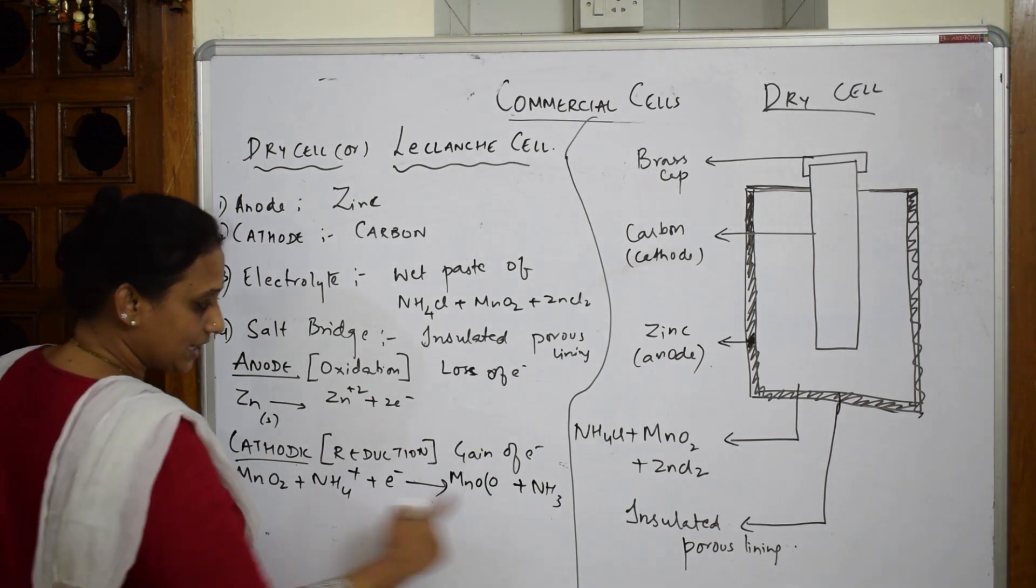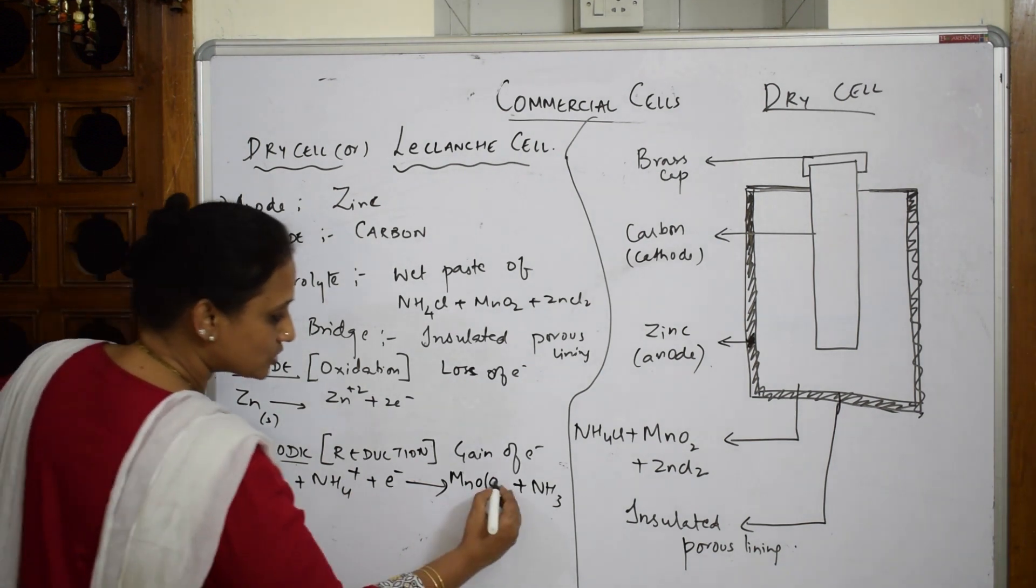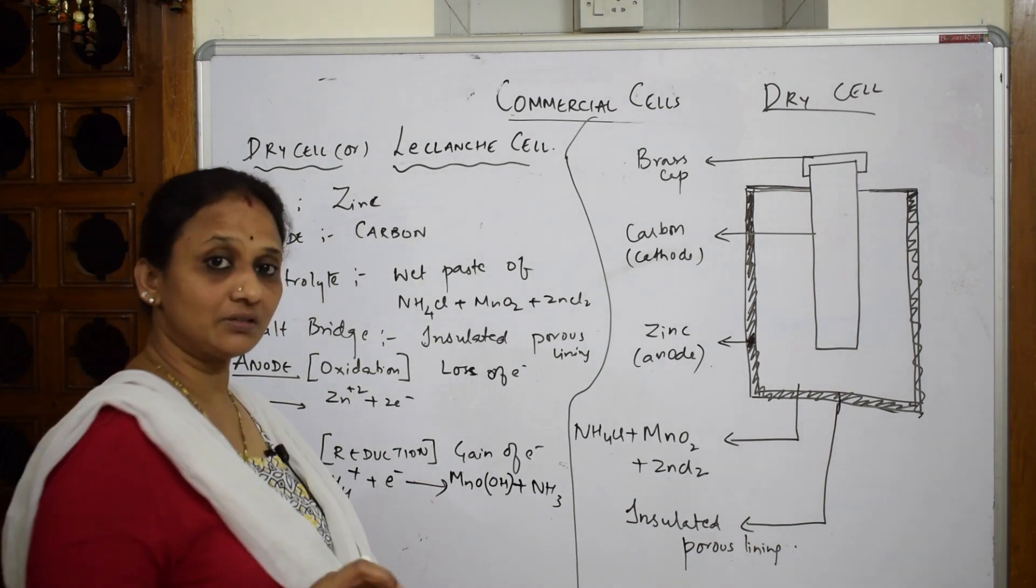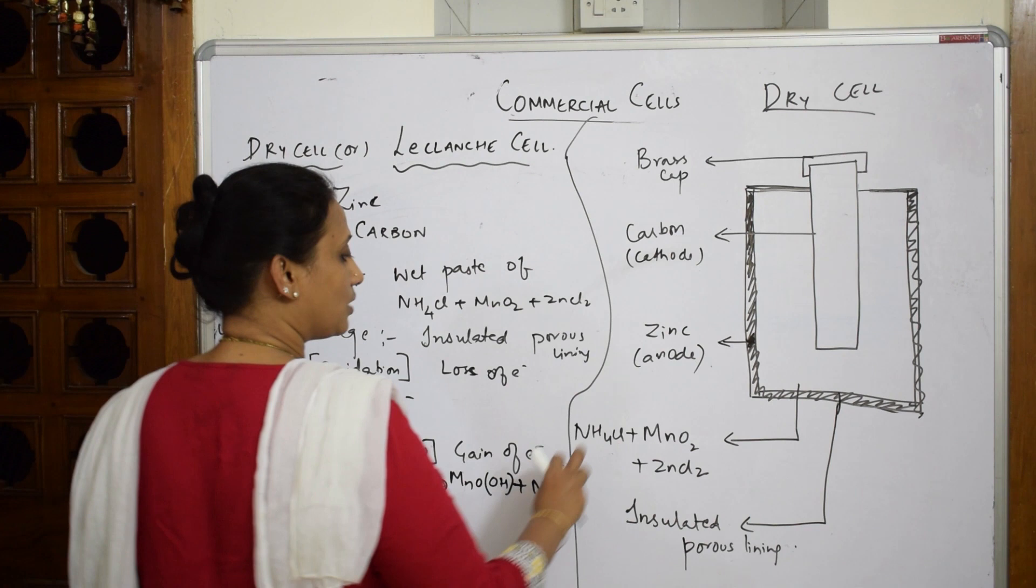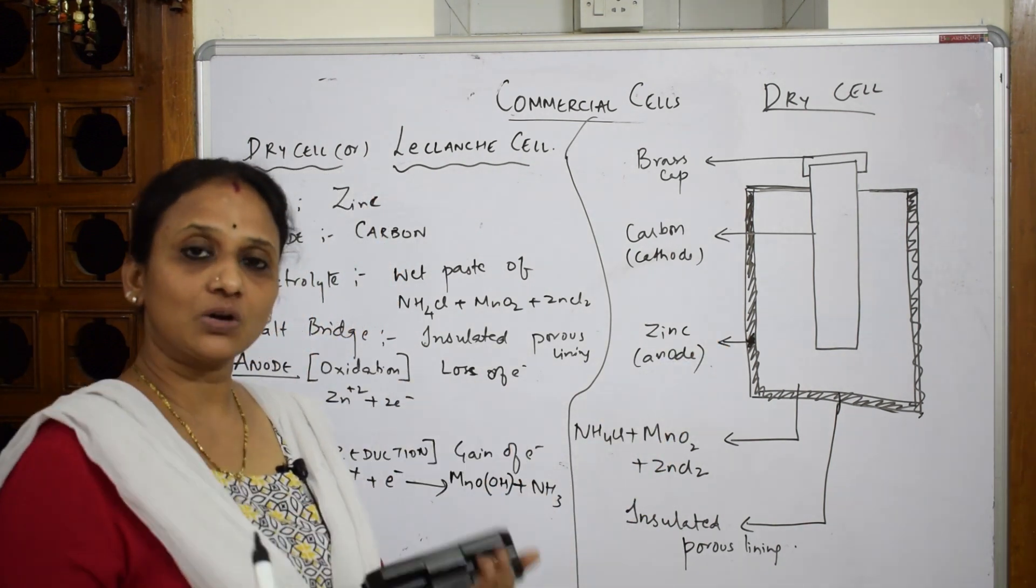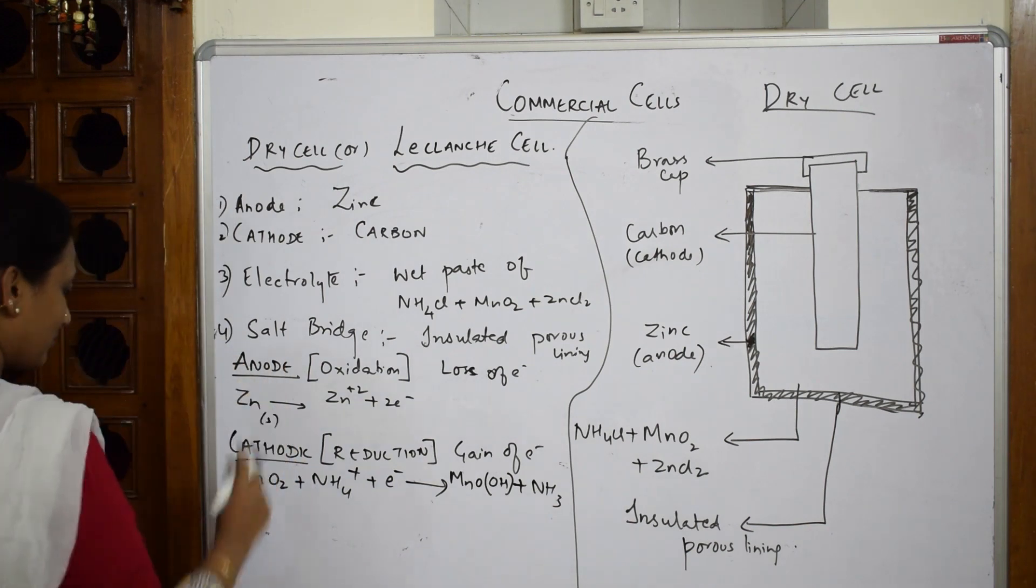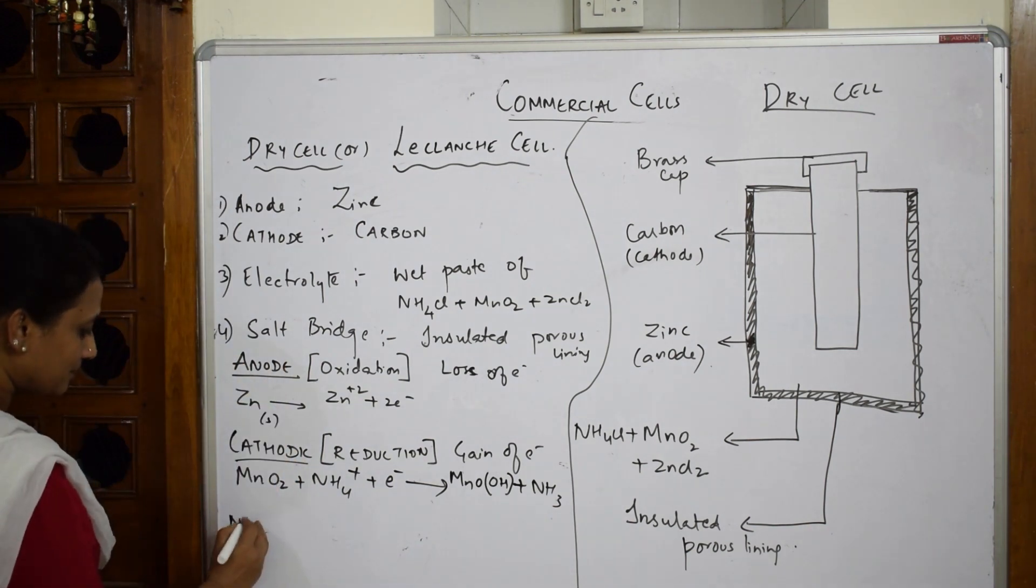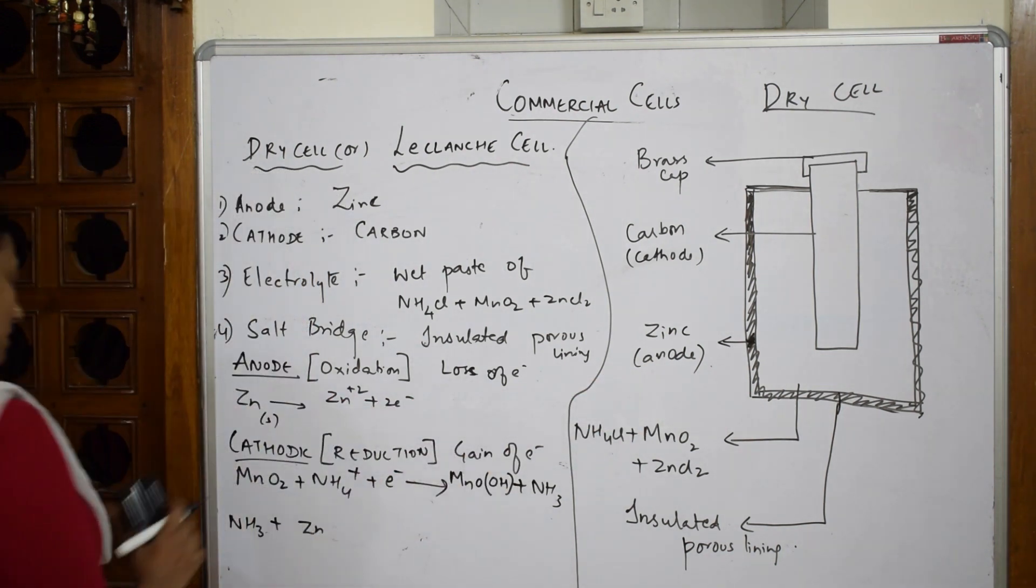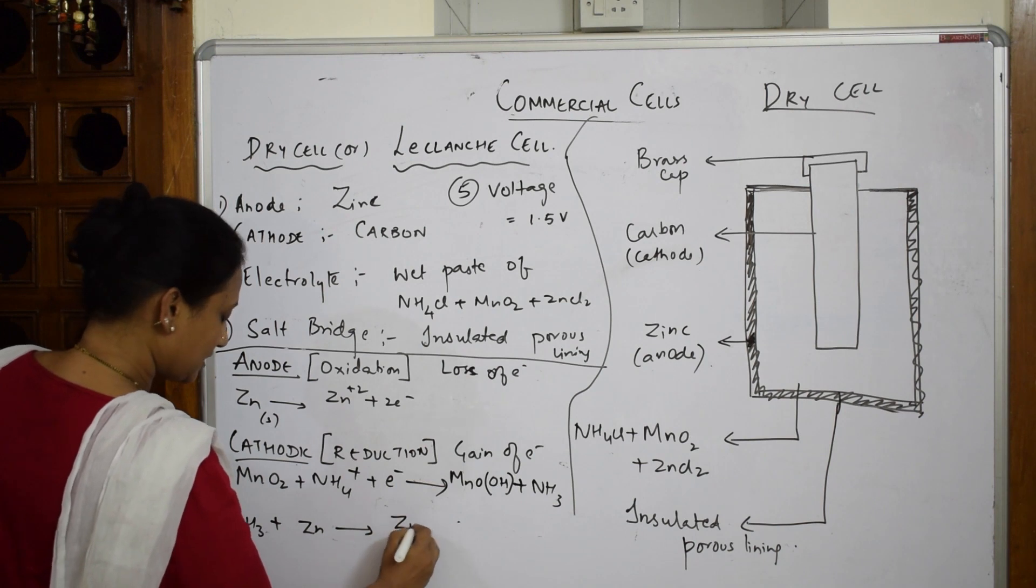This NH3, ammonia, is going to come out and combine with zinc. What will happen? It will form a complex. See how I'm writing: this ammonia combines with zinc. Where is the zinc present? This is acting as an anode. It's going to form a complex: you're going to get Zn(NH3)4²⁺.